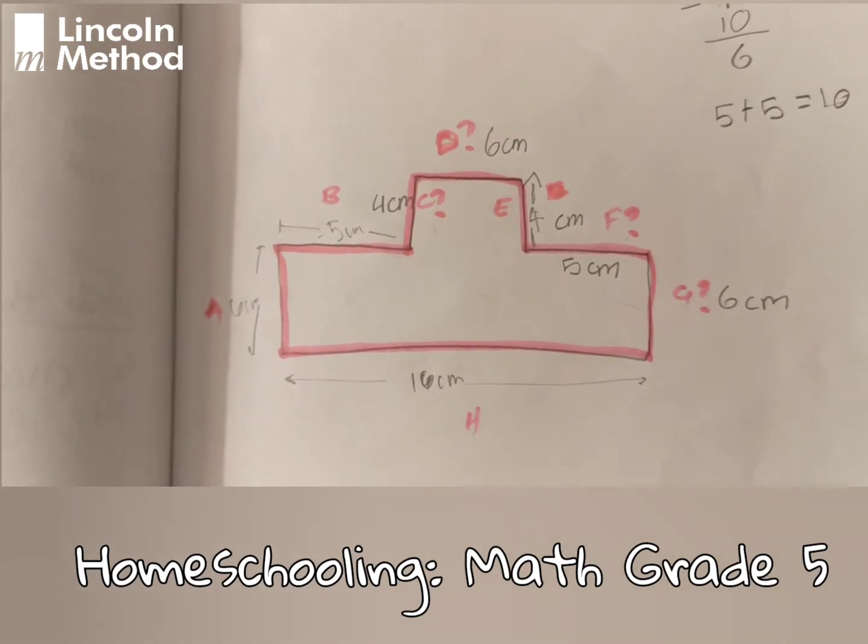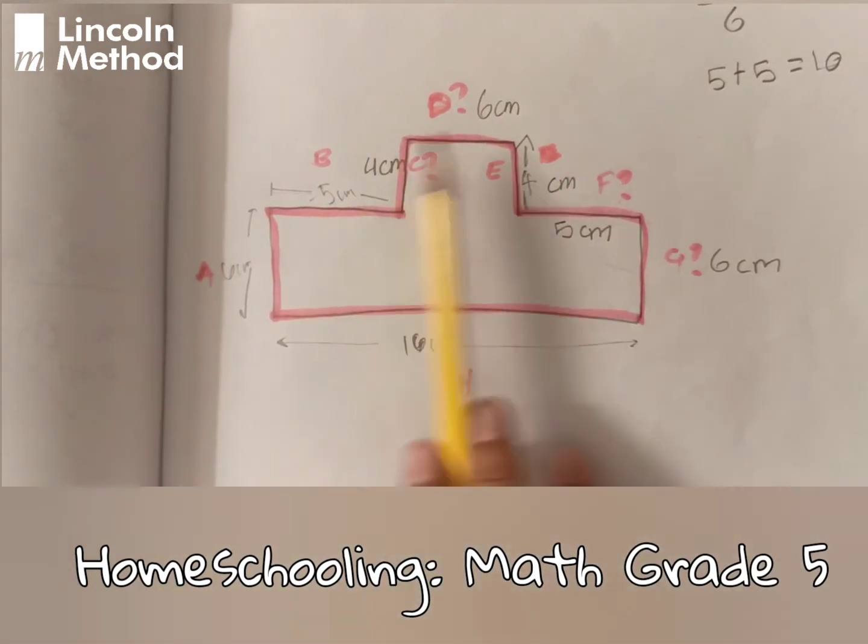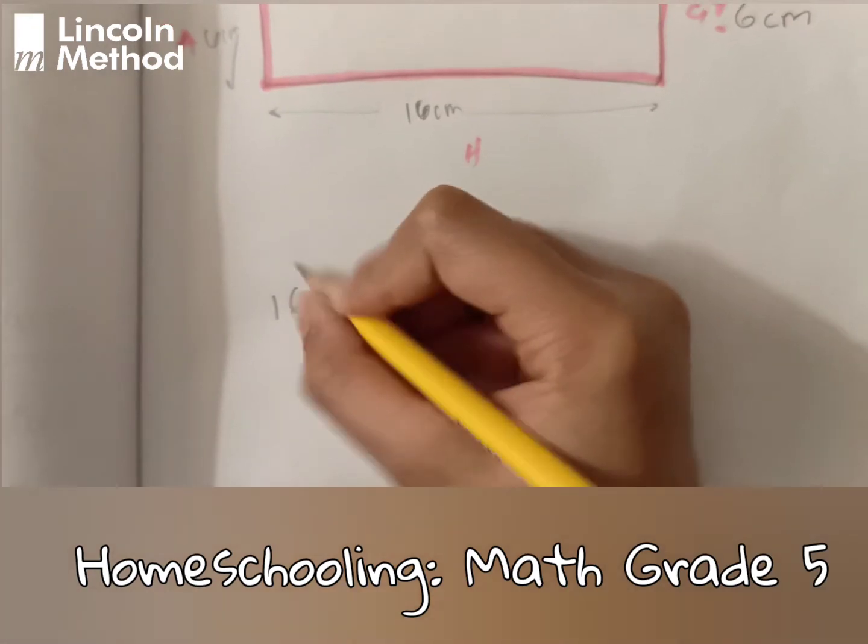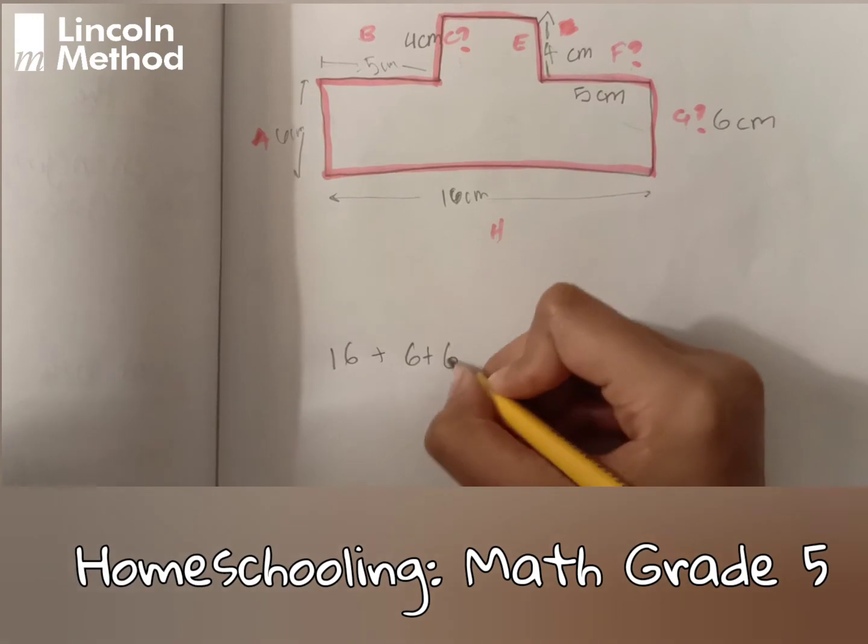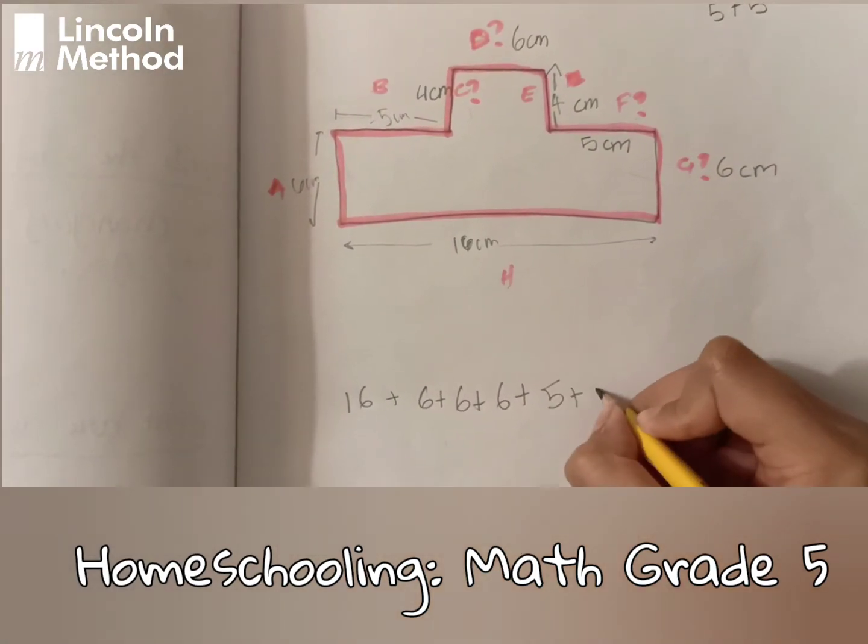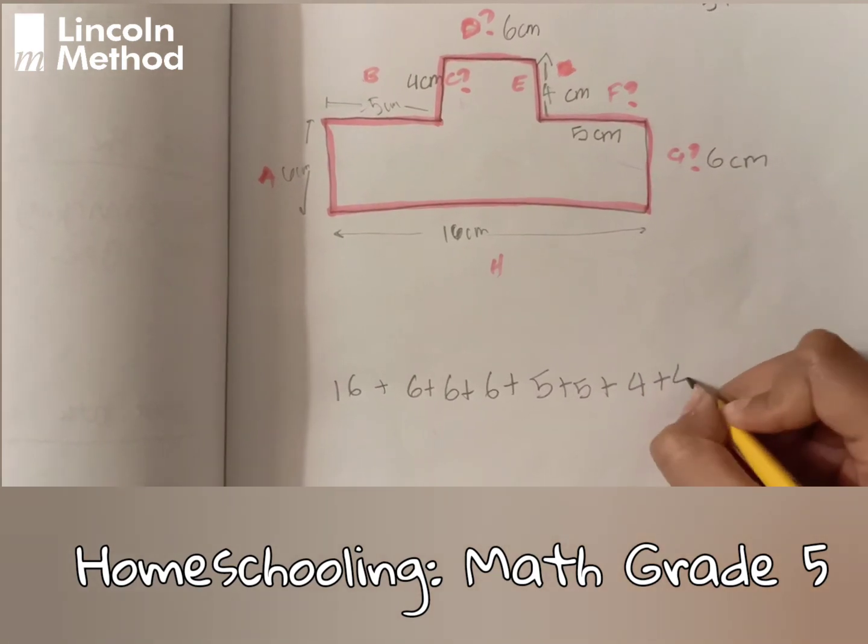Now we are going to find the perimeter. We're going to add all these numbers up: 16 plus 6 plus 6 plus 6 plus 5 plus 5 plus 4 plus 4.